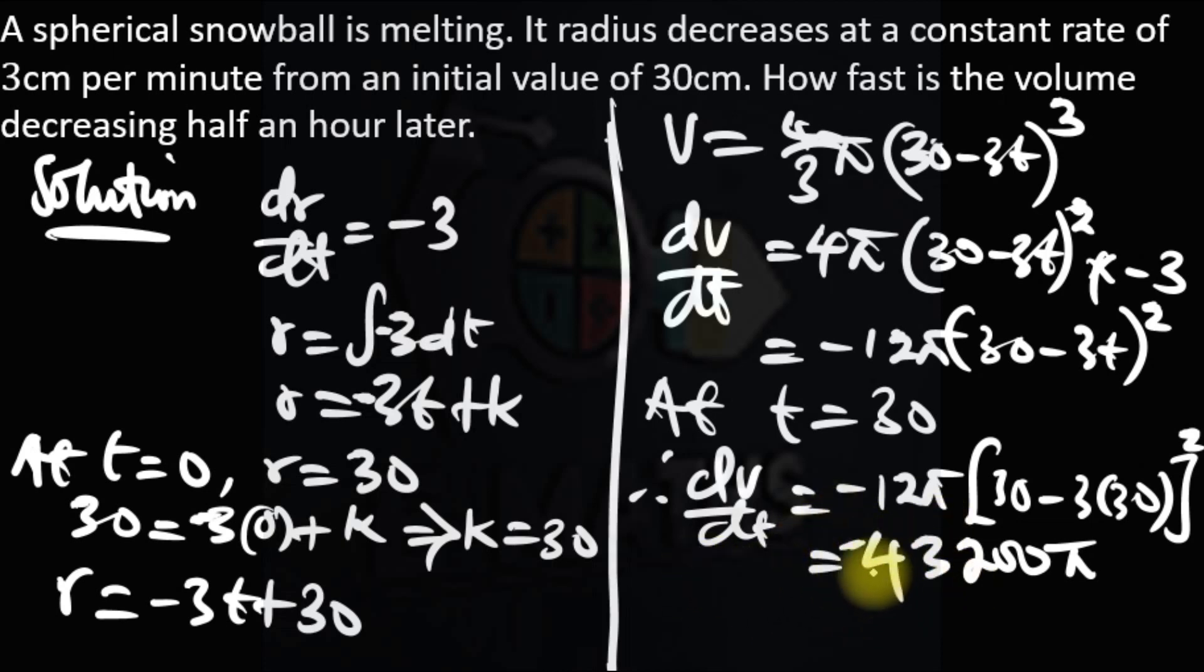The negative sign shows that the volume is decreasing. So the volume is decreasing at the rate of 43200 pi. This is just a combination of integration and differentiation application. Thank you.